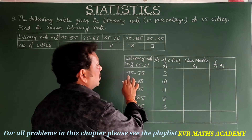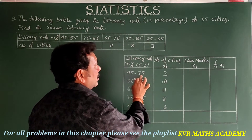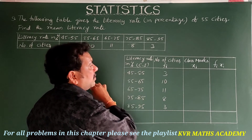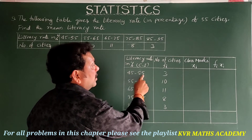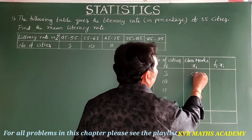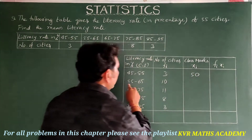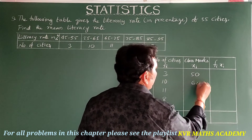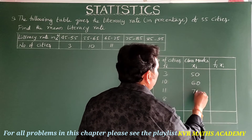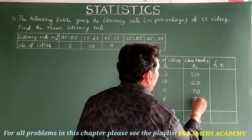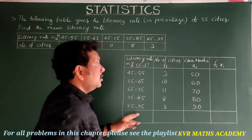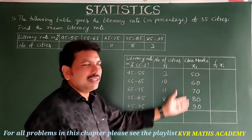Class marks are the average of the class interval. So 45 plus 55 is 100, divided by 2 is 50. Similarly, the class marks are 50, 60, 70, 80, and 90.